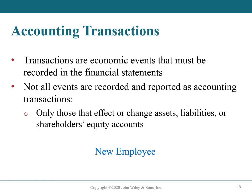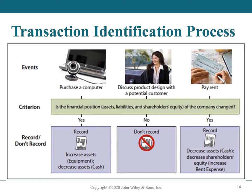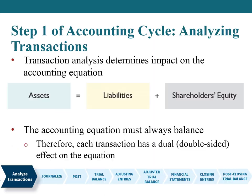In the case of the new employee described before, no asset, liability, or equity item is affected simply by the act of hiring the employee, even if the company signs an employment contract. This illustration provides examples of selected transactions that should or should not be recorded. Because transactions such as the purchase of a computer or the payment of rent are economic events that affect the company's financial position in measurable amounts, they must be recorded in the accounting records. Discussing a matter with a potential customer may affect the company's future financial performance if they actually purchase goods or services, but until then there is no effect on the company's current financial position, and these events are not recorded.